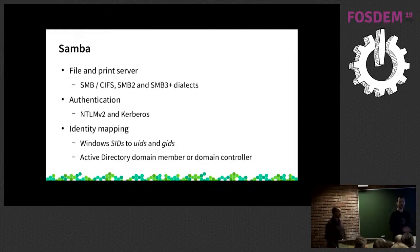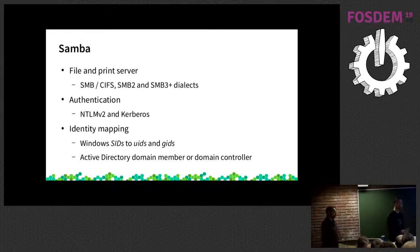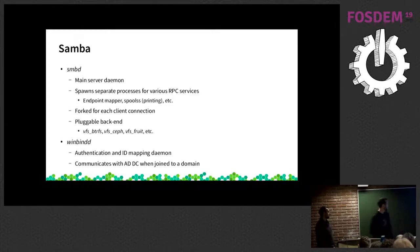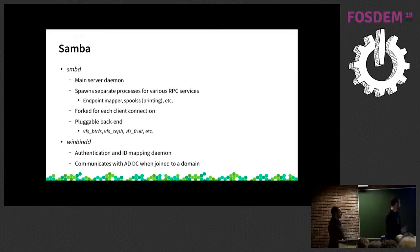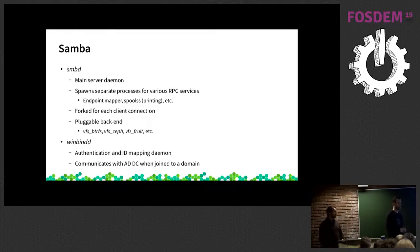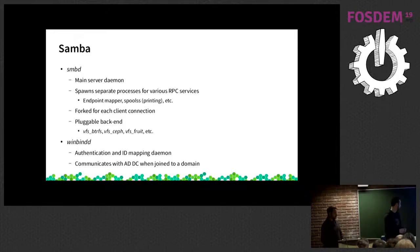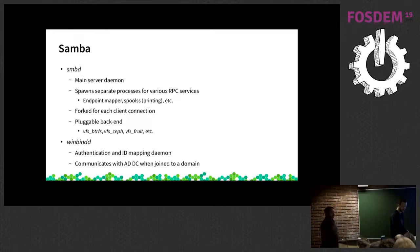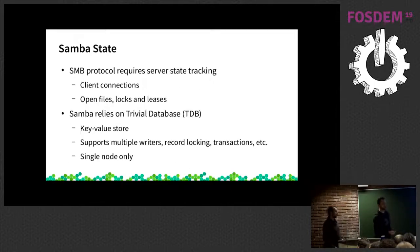Starting off with Samba — hopefully you're all familiar. It's a SMB file server. It handles authentication, Active Directory integration, so you can join a domain controller or act as a domain controller. With Samba we have one main file server daemon, which is SMBD. It's generally forked for each client connection. We have a pluggable file system backend, a VFS layer, which is used for things like our Ceph integration. We have a LibBTRFS integration for BtrFS, and some snapshot-specific functionality. We have Winbind for authentication and ID mapping.